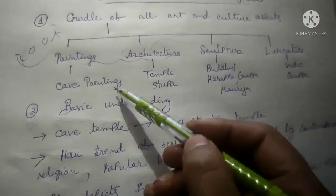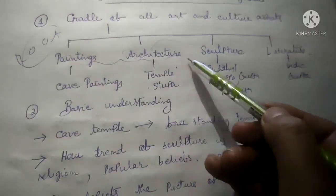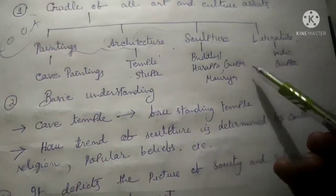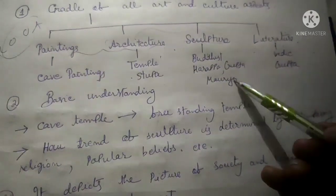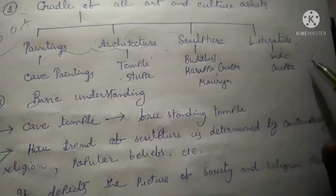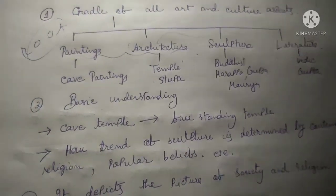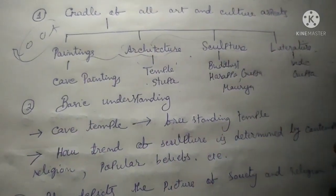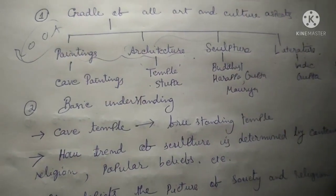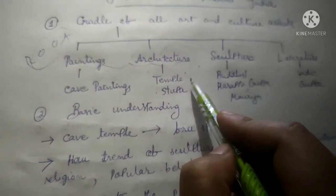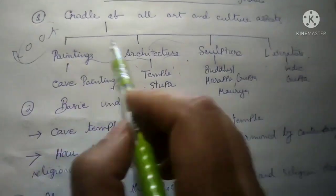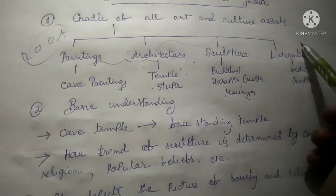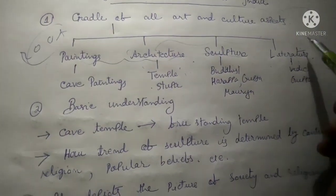For example, cave paintings; in architecture, temple and stupa; in sculpture, Buddhist, Harappan, Gupta, Mauryan; in literature, Vedic, Gupta and more — these four major trends of art and culture have derived their roots from ancient India. That is why ancient India bears immense importance, not only for your syllabus but for you as a person.